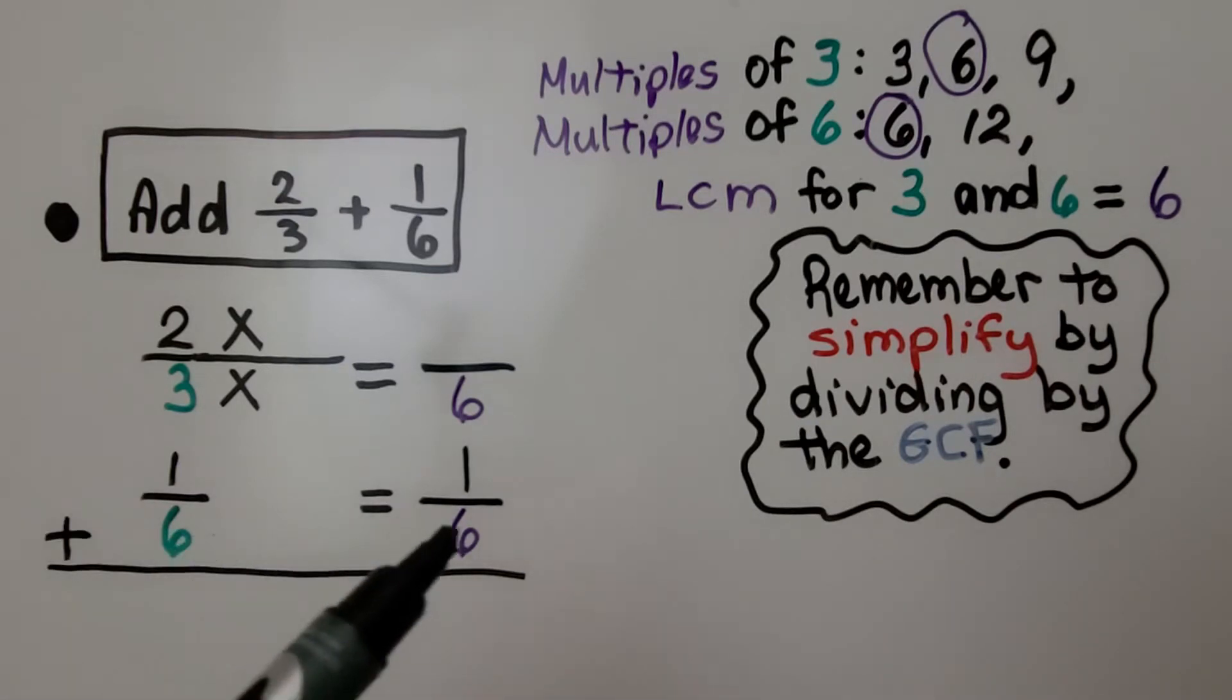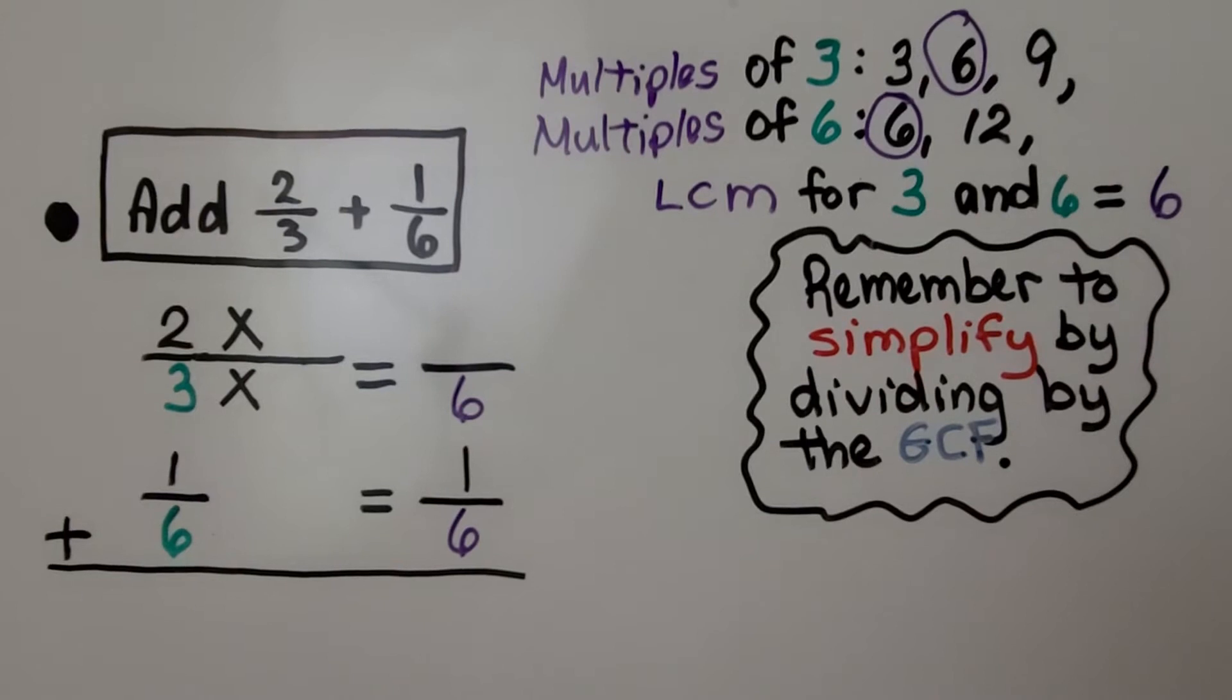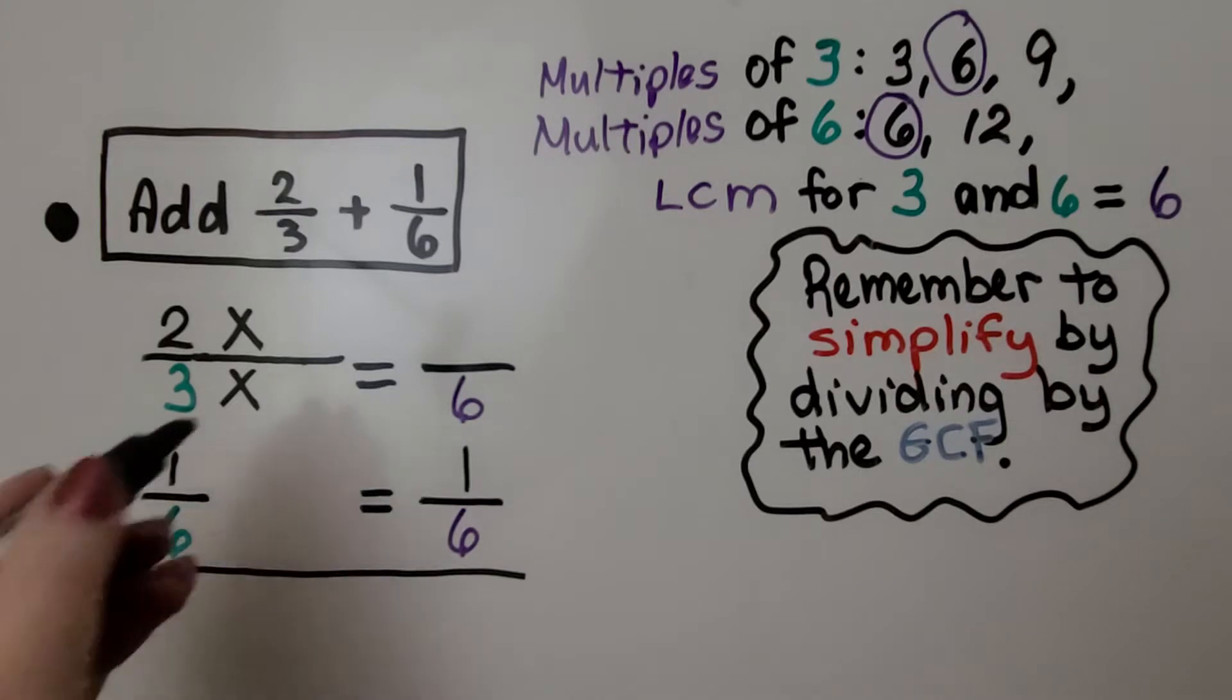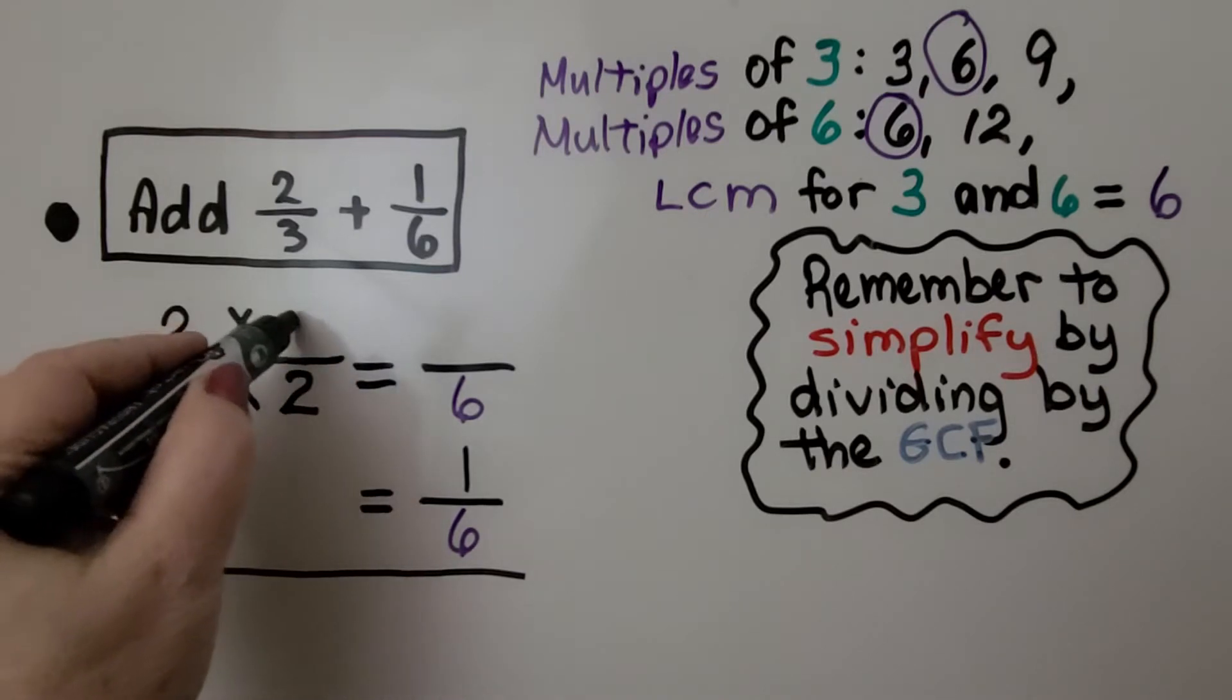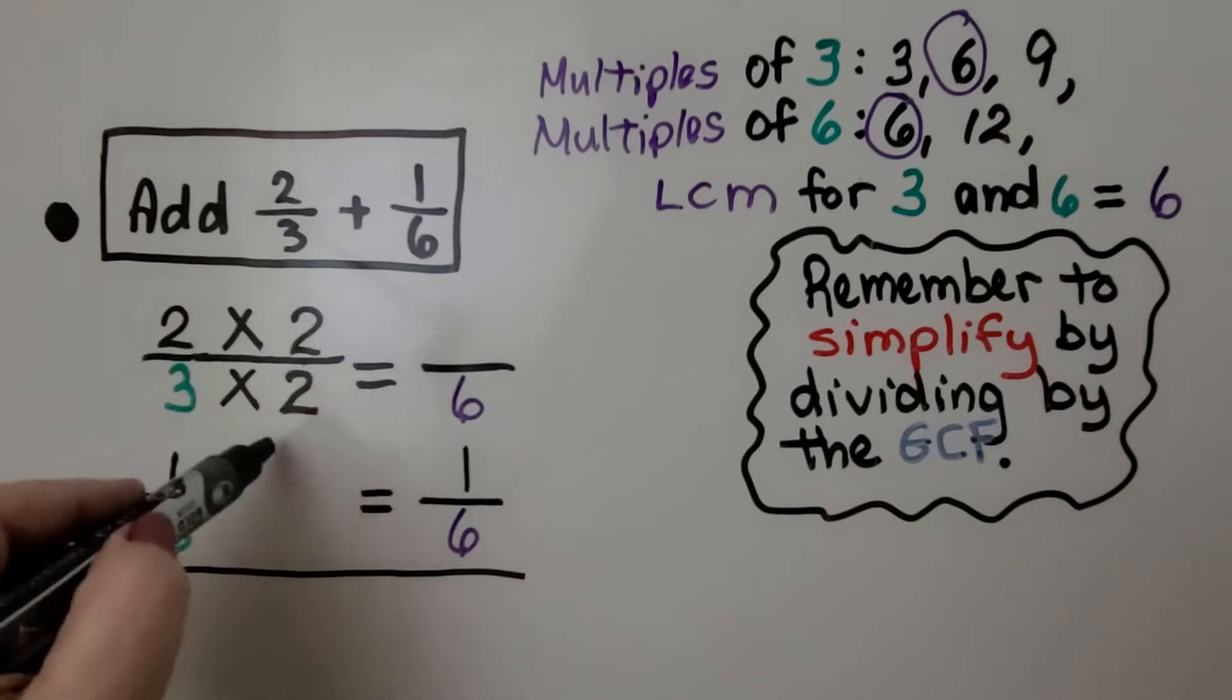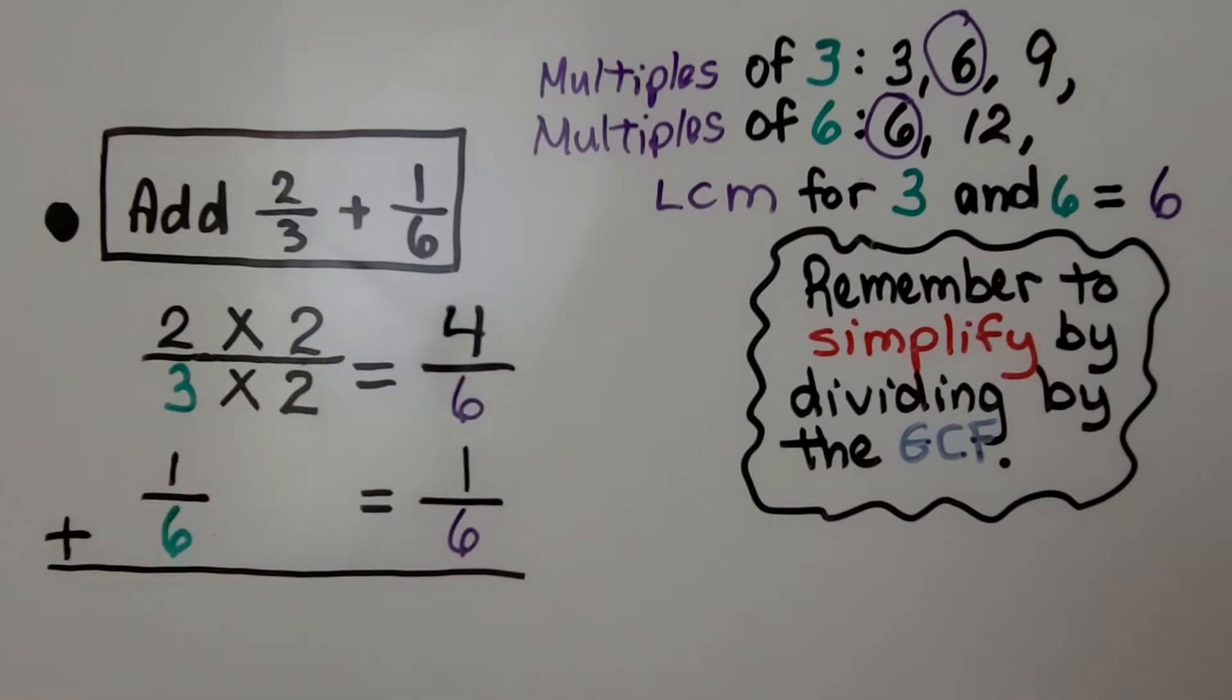The 1/6 can just slide over. The 2/3, though, needs to be changed to have a denominator of 6. We need to have this denominator, 3, become a 6. That's an easy one. 3 times 2 is 6. We need to multiply the numerator by that same number. As I always say, it gets jealous. It wants to be multiplied by the same number. That means we're going to have 4/6. Now they have the same denominator. We can add them.